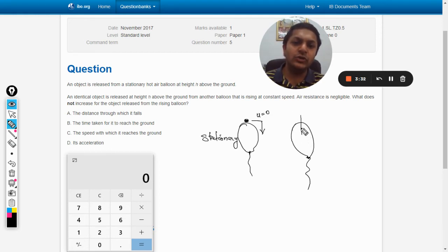But in the second case, the balloon is rising up with certain velocity, let's say u, and there is also a stone here. This stone has an upward velocity, and now it is thrown up with the velocity u.